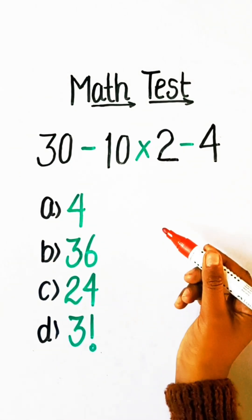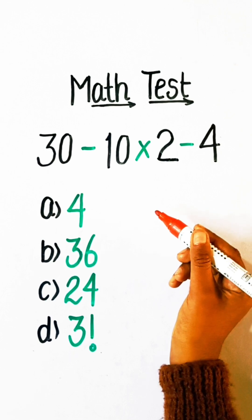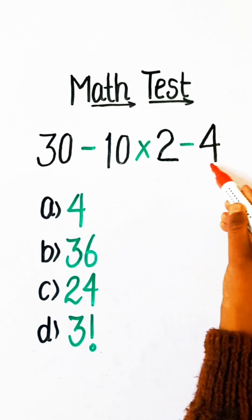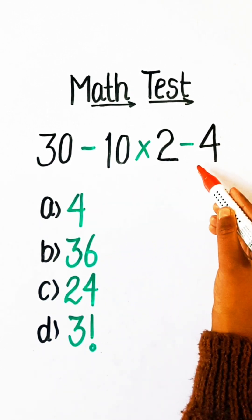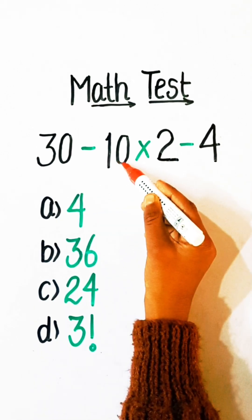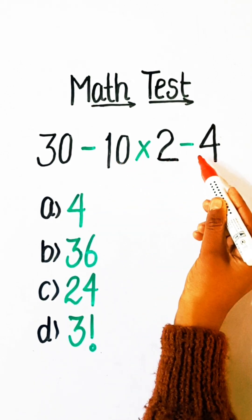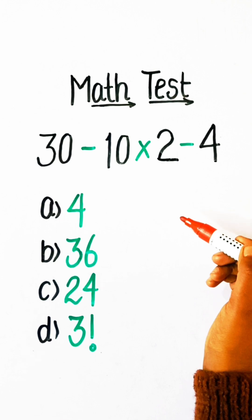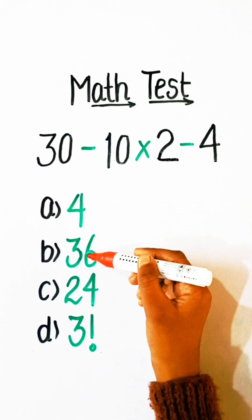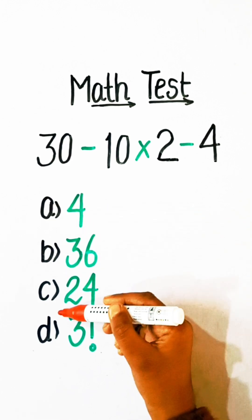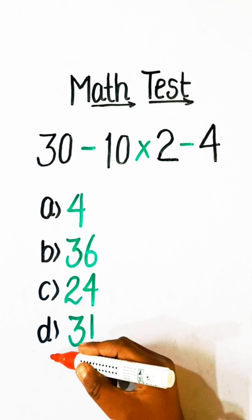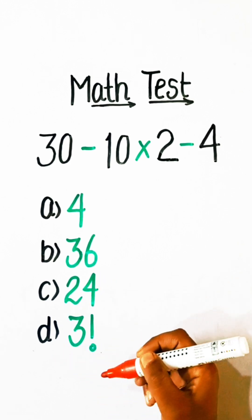Hello everyone, welcome back to my YouTube channel. In this video we will solve this basic math problem: 30 minus 10 multiplied by 2 minus 4 equals to what? Option A: 4, Option B: 36, Option C: 24, Option D: 3 factorial.